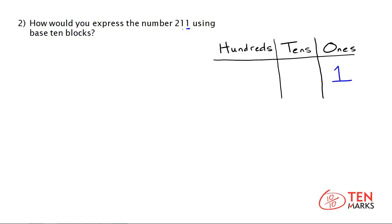The place directly to the left of the ones is the tens place, and this number has one ten. And lastly, the digit here to the left of the tens place is the hundreds place, and I see the digit two here.